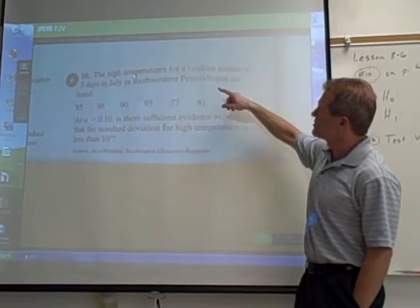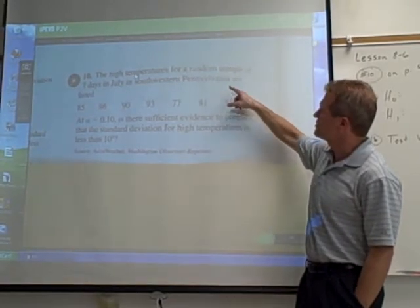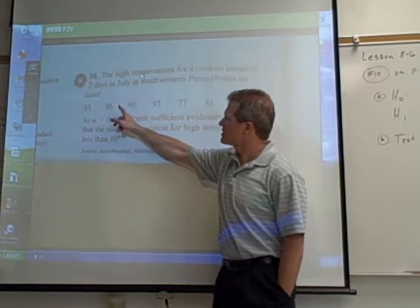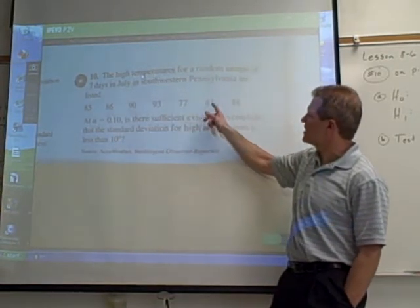On your books, this is on page 446. The high temperatures for a random sample of seven days in July in southwest Pennsylvania are listed: 85 degrees, 86 degrees, 90, 93, 77, 81, 88.